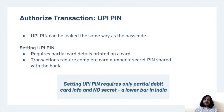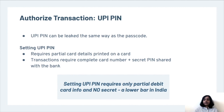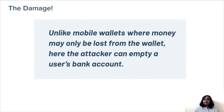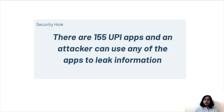Once a user's profile is compromised, for the attacker to do a transaction, he requires a UPI PIN. The UPI PIN can be leaked in the exact same way as the passcode. Setting a UPI PIN only requires partial debit card details printed on the card. Transactions in India actually require the complete debit card number and a secret PIN shared with the bank. However, setting a UPI PIN does not require the secret PIN, which is a lower bar. Unlike mobile wallets where money may only be lost from the wallet, here the attacker will completely empty a user's bank account. There are 155 UPI apps and the attacker just needs to compromise or leak information from any one of those apps.